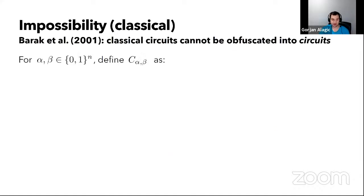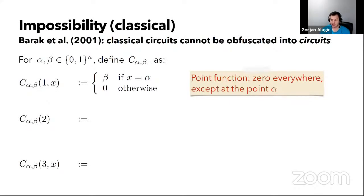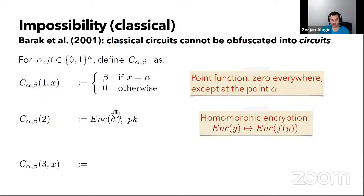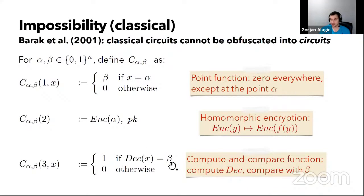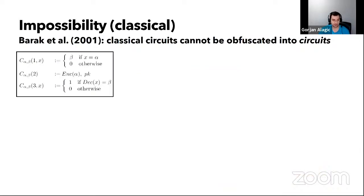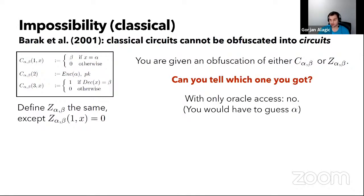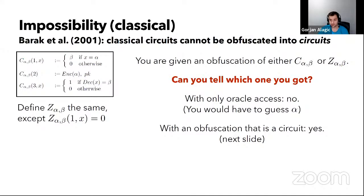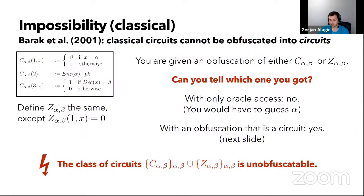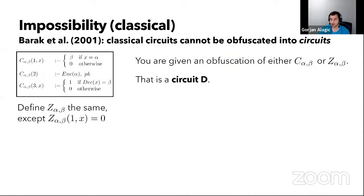It's been known for some time that classically obfuscation is impossible. The counterexample circuit family looks something like this: a certain point function combined with an encryption of the special input on which the point function does something interesting, and then a checker circuit, which tells you whether you're holding an encryption of the special output. The task is to distinguish this family from a family where the point function is just zero everywhere.